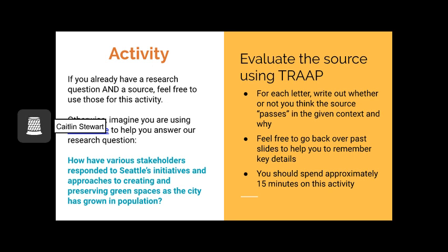Now it's time to put this method to the test with an activity. If you already have a research question and a source, feel free to use those. Otherwise, imagine you are using the source linked in the text comment of this VoiceThread as a resource for the research question: how have various stakeholders responded to Seattle's initiatives and approaches to creating and preserving green spaces as the city has grown in population? Either on a piece of blank paper or in a blank document, write out TRAP. After reading or skimming the resource, for each letter write out whether or not you think the source passes in the given context and why. I estimate that this process should take roughly 15 minutes — don't feel obligated to read the entire source from start to finish; just look for key clues that could help you evaluate the source using TRAP. When you finish this evaluation, continue on to the next slide.